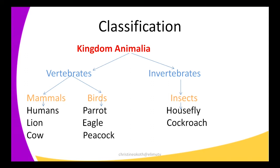On the other side we have the invertebrates — animals that do not have the backbone. Under invertebrates we still subdivide these organisms into insects. We look at the external and internal features that make these organisms to be classified as insects. For example, insects have three body parts, three pairs of legs, and they have wings. So under insects we classify housefly and cockroach. That is basically classifying organisms — grouping them in various groups based on their structures and ways of life.